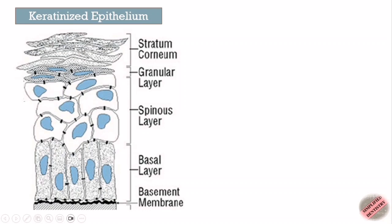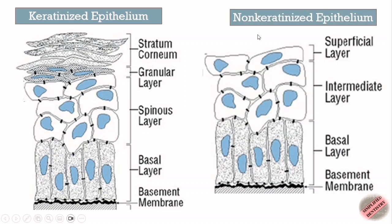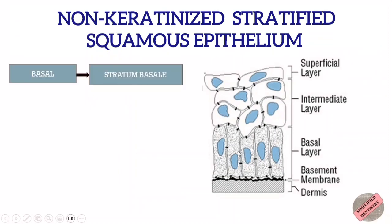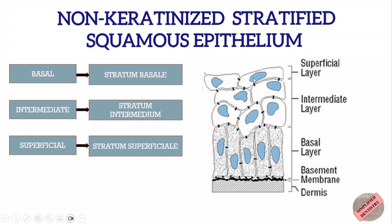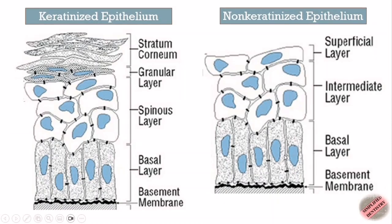Whereas the stratification in non-keratinized epithelium is less distinct. There are only three layers: stratum basale (the basal layer), stratum intermedium (the intermediate layer), and stratum superficiale (the superficial layer). The basal cells of both types are similar — a single layer of cuboidal cells is evident in both keratinized and non-keratinized epithelium.